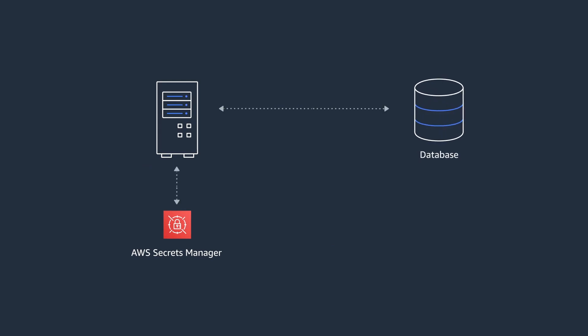Since your application is already configured to pull the latest credentials, it will get the latest credentials next time it tries to access the database. So if we take a look at the high-level overview of the pattern: you store your credentials in Secrets Manager, Secrets Manager takes care of the rotation and maintaining the latest set of credentials for you, and your application always pulls the latest set of credentials from Secrets Manager at runtime — all happening securely and automatically.